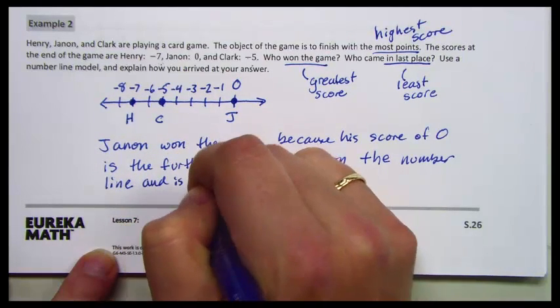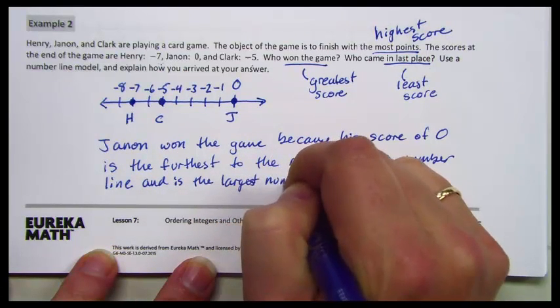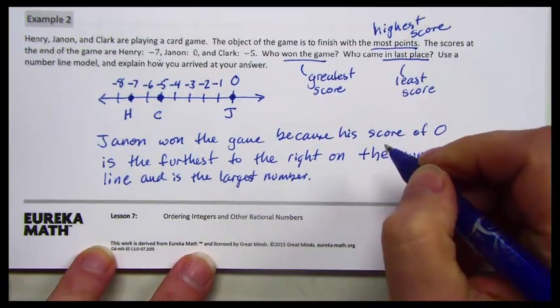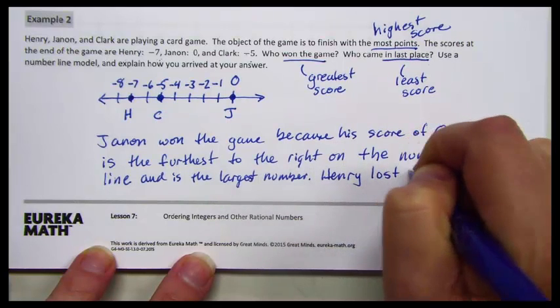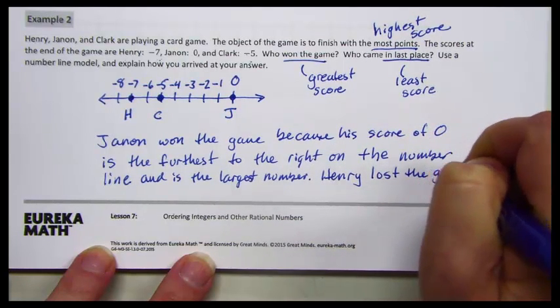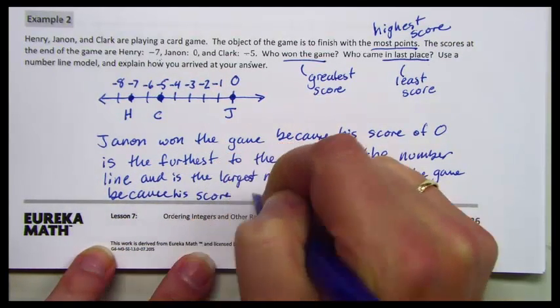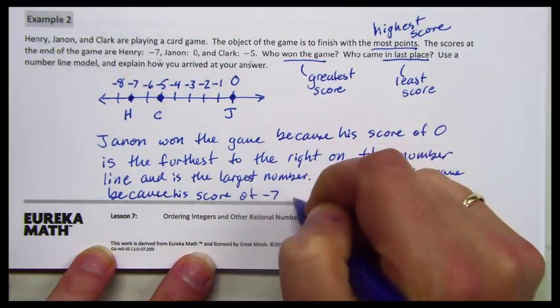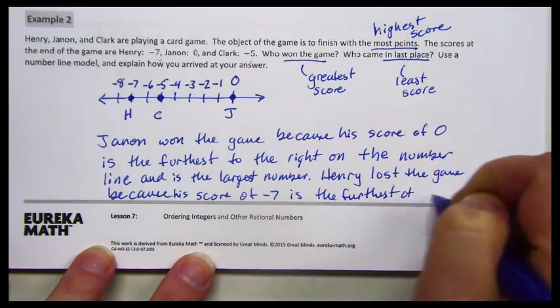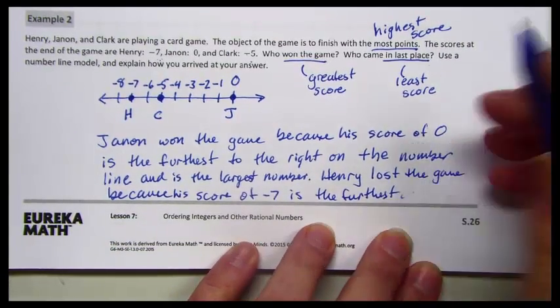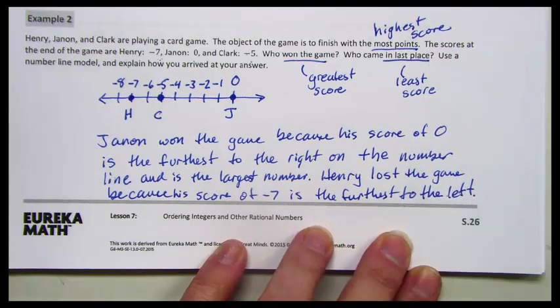Henry lost the game because his score of negative 7 is the furthest to the left. That means it's the smallest number.